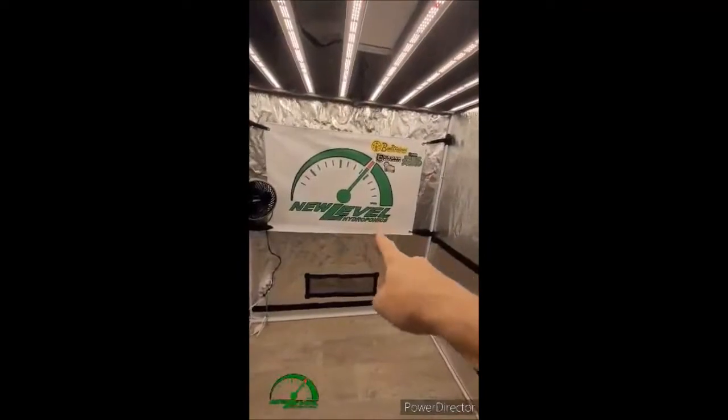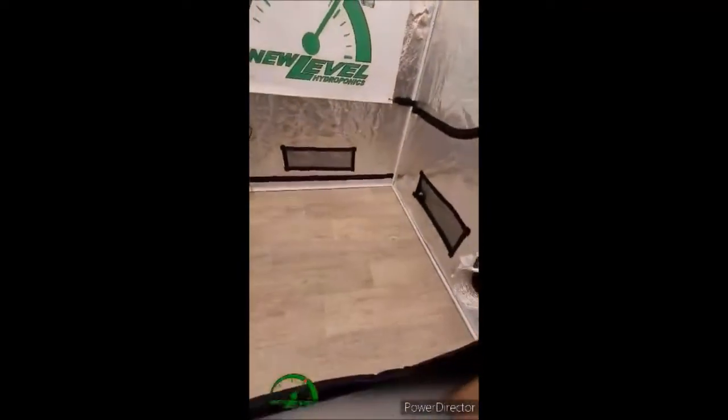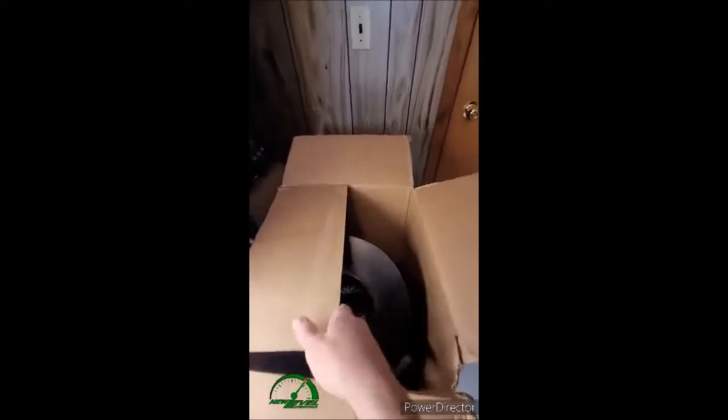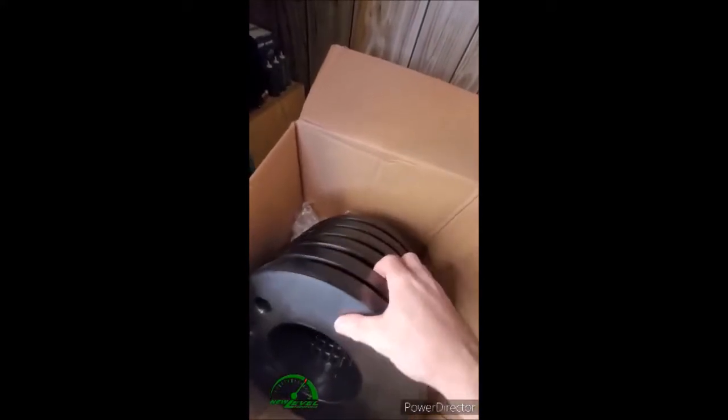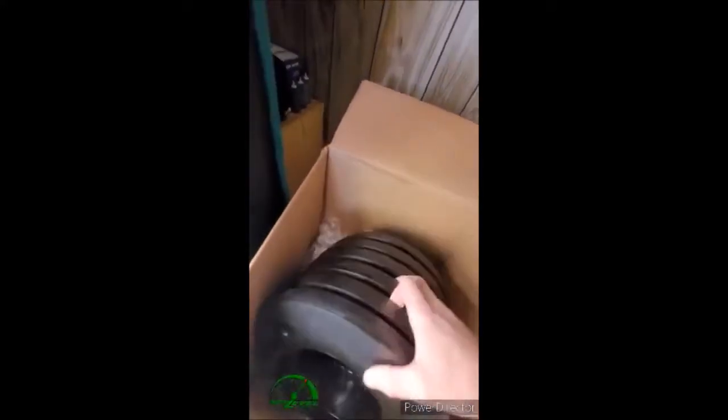As you guessed it, we're working with New Level Hydroponics again on this grow. Inside this box we have another kit. This kit is 3.5 gallon DWC. We have six, should be six lids in here. Everything inside this box is all that you're going to need.